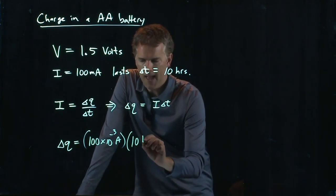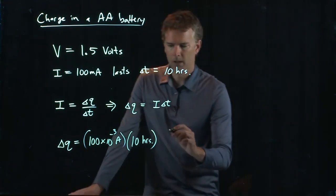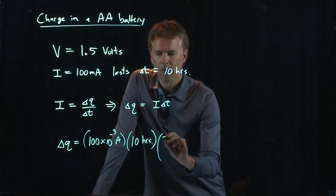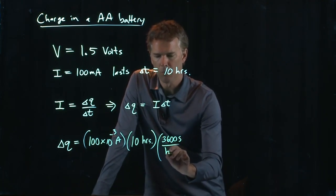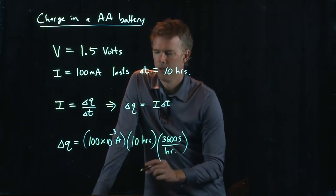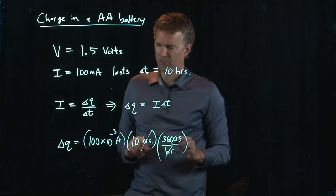ΔT is 10 hours, but hours is not SI units. We need to get that into seconds. And so we have 3,600 seconds is 1 hour. So the hours will cancel out, and we will end up with amps times seconds.